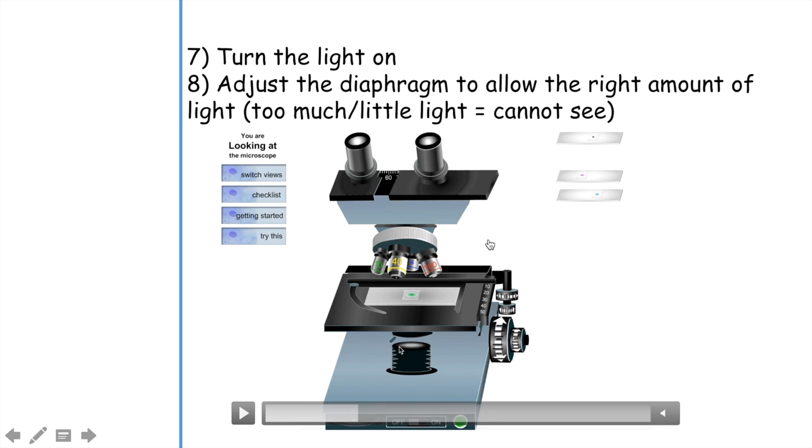Too much light, you can't see, it's too bright. Too little light and it's too dark and you still can't see. So find the diaphragm and find the right adjustment. As you move it back and forth, you'll figure out which one gives the most light, which one gives the least amount of light. To let you see what's really going on with the diaphragm, we're going to switch views so we can see what it looks like when we're actually looking through the eyepieces.